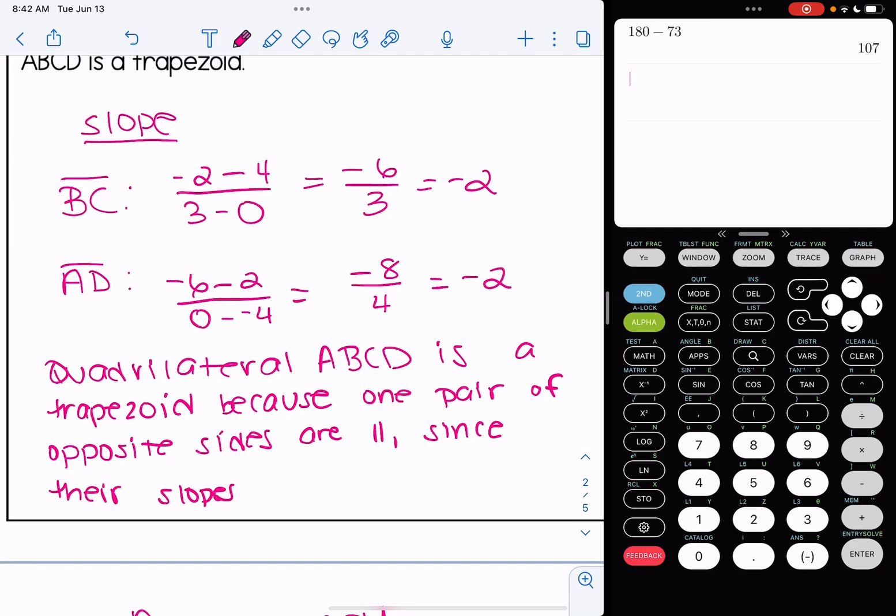So our coordinate proof consists of our graph using whatever formulas we need to kind of verify the shapes characteristics and then writing this conclusion at the end.